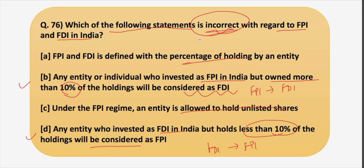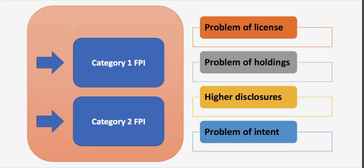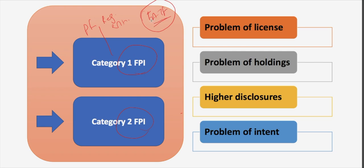Let's discuss some points in detail. In 2019, FPI categories were reduced from three to two. Category one involves government and government-related investors, or entities at least 75 percent directly or indirectly owned by such investors. It also includes pension funds, appropriately regulated entities such as insurance entities and banks, and importantly, entities from FATF member countries — that is, Financial Action Task Force member countries.